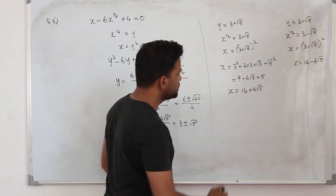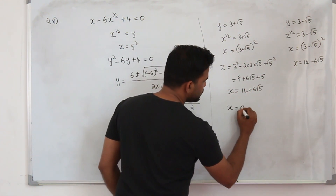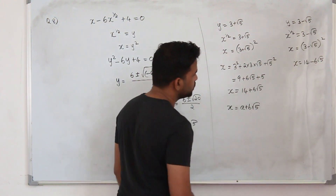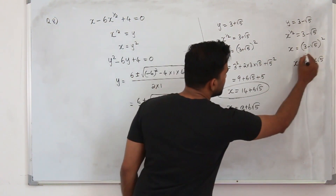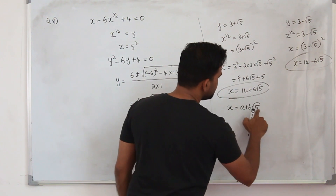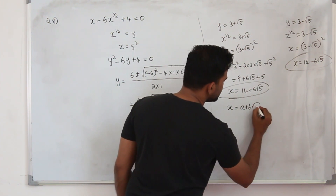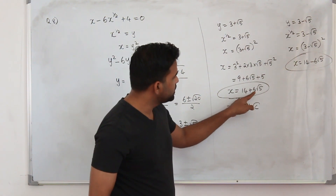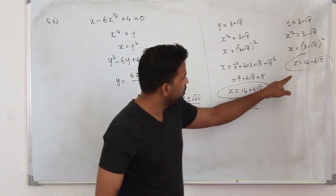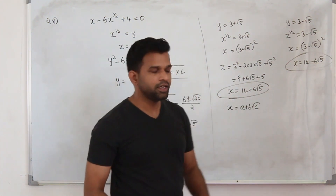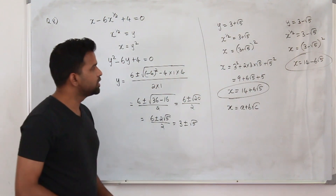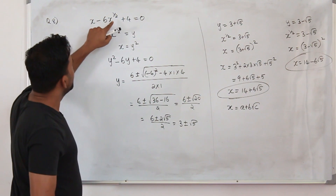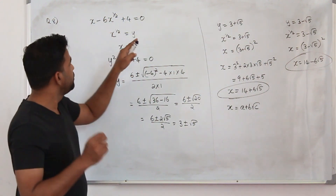So you have two values. They want you to write them in the form a plus b root of c, and these two values are in that form. So a equals 14, b equals 6, c equals 5 — or 14 minus 6 root 5. All of a, b, c are integers. That's it — this question has 5 marks.